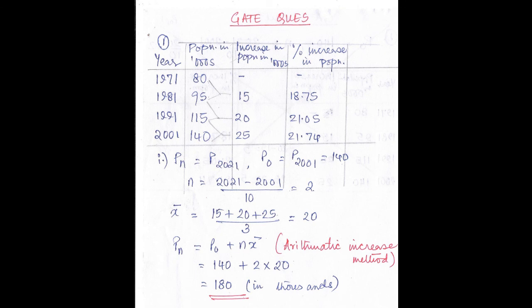Now let us forecast the population for 2021. Pn = P2021, which is what we need to find. P0 is the last known population, which is the 2001 value: 140 thousands. N is calculated as (2021 − 2001) / 10 = 2 decades. So N = 2.